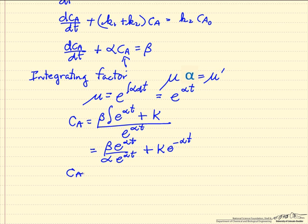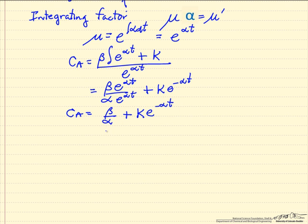So the concentration of A is beta over alpha plus a constant e to the minus alpha t. So this is known as the particular solution, and then this is known as the homogeneous solution.